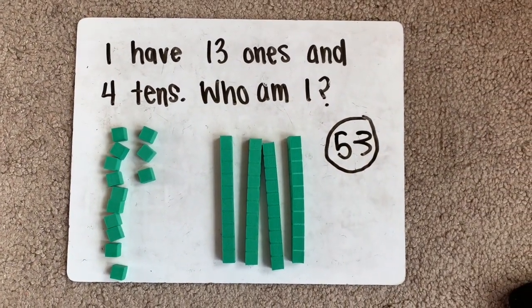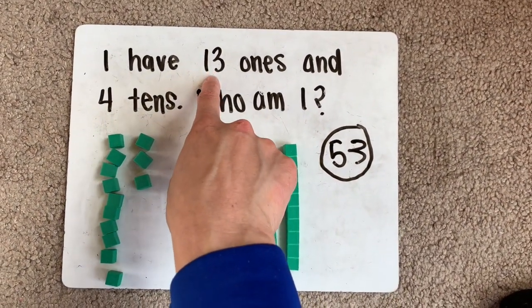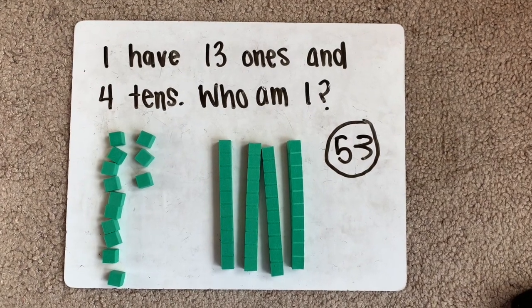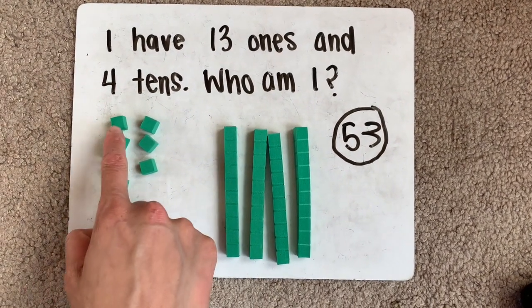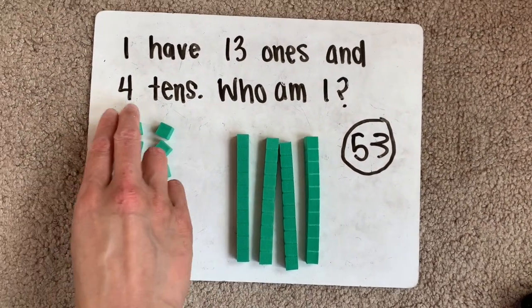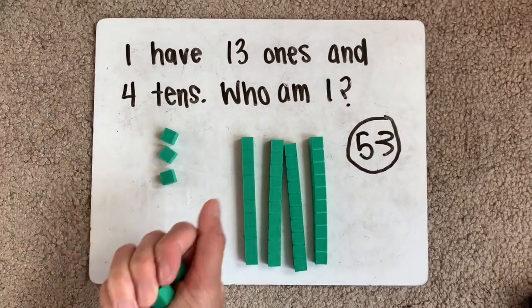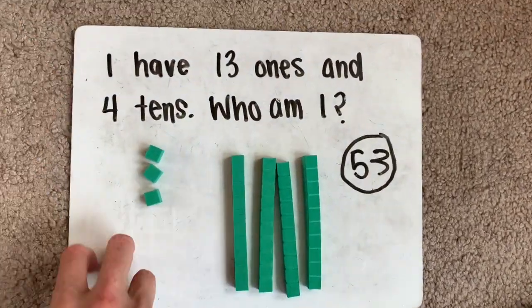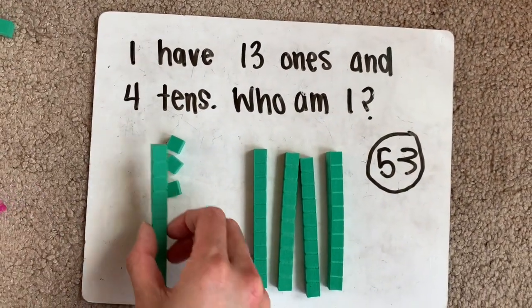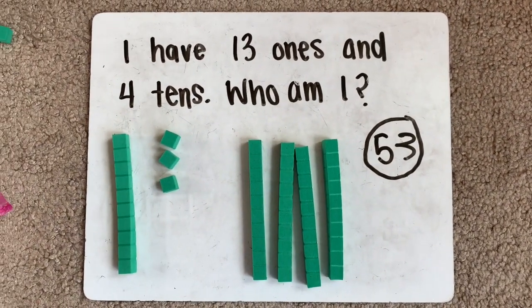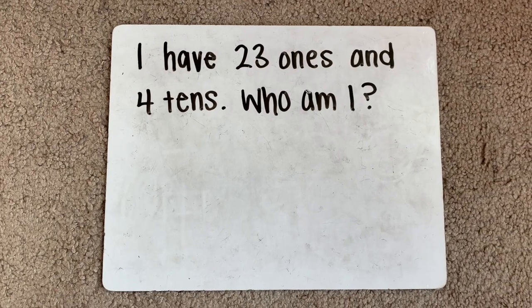You might have also known right away that 13 was one 10 and three ones. Instead of making 13 ones, we could also switch out these 10 for another 10 stick. All right, let's do our next riddle.